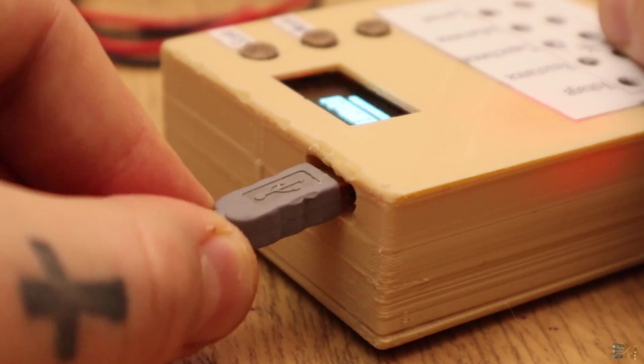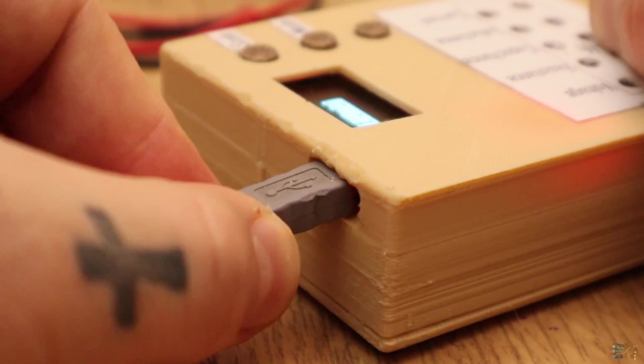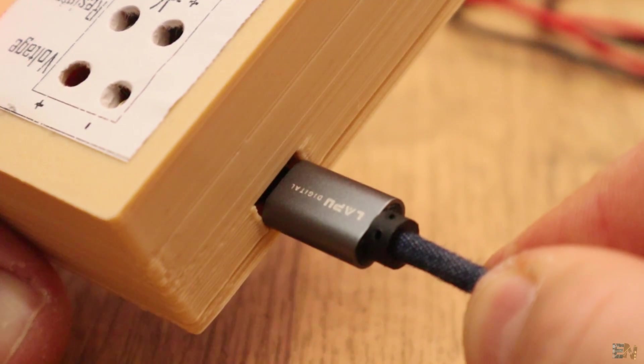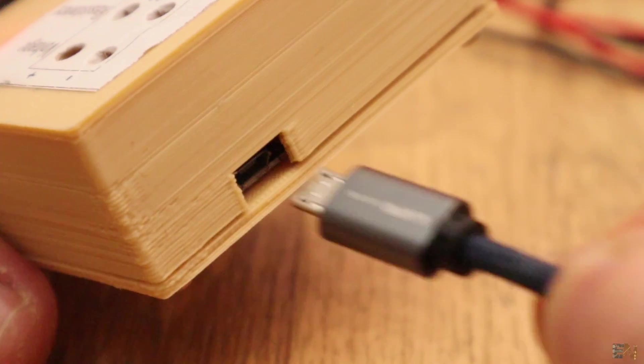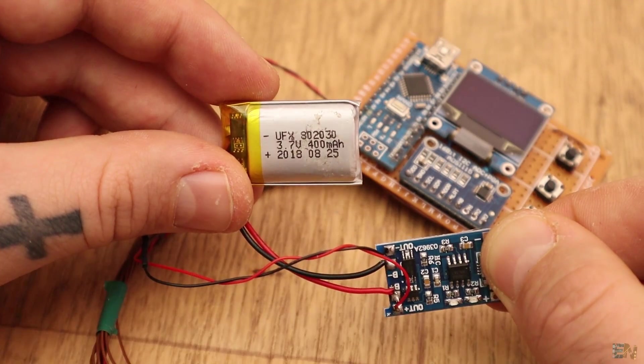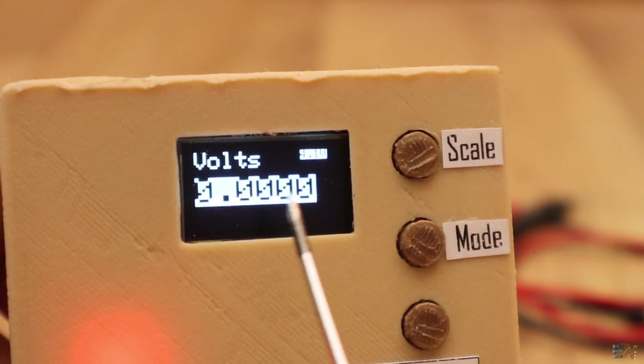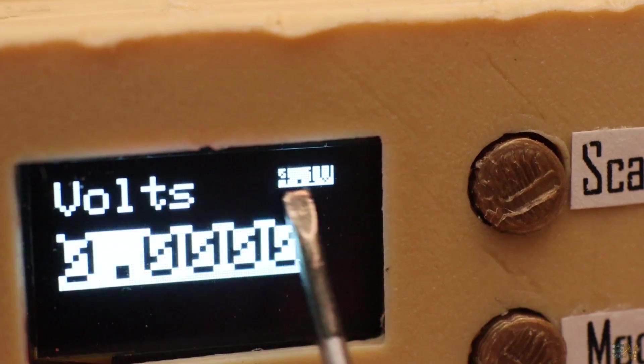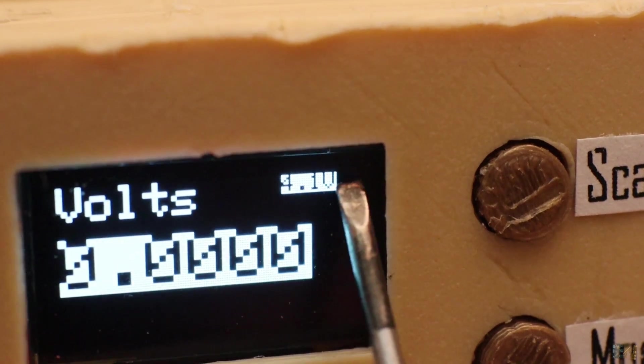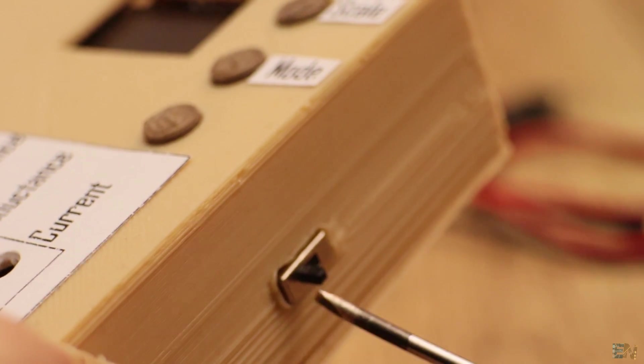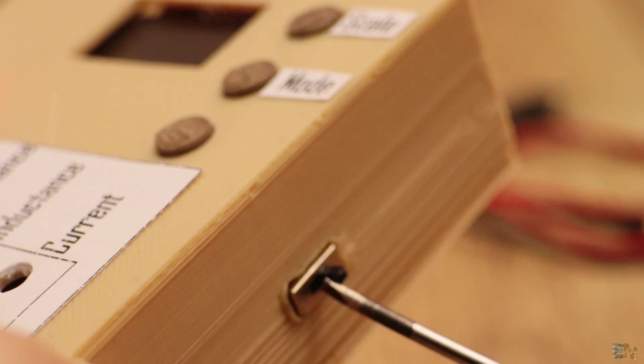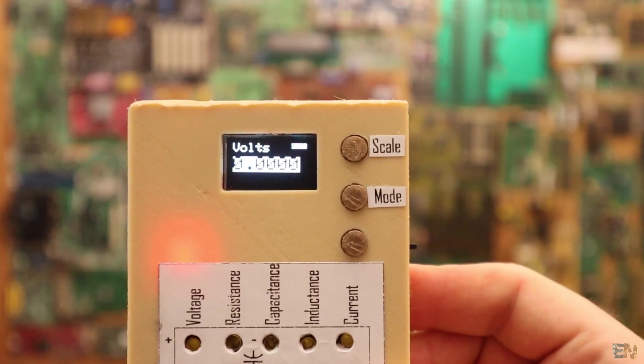On top we have a hole to connect the USB to the Arduino for programming, and on the bottom part we have the charging plug for a 3.7V battery inside. On the screen we can see the mode and scale, and then the measurement value. On the corner we also have the battery value so we know when to charge it. On the side of the 3D printed case we have a sliding switch to turn this on and off.